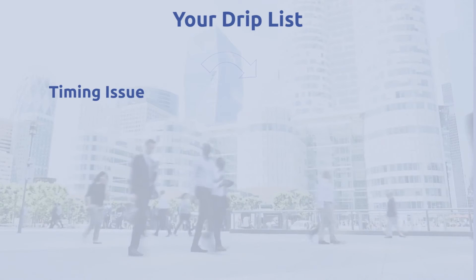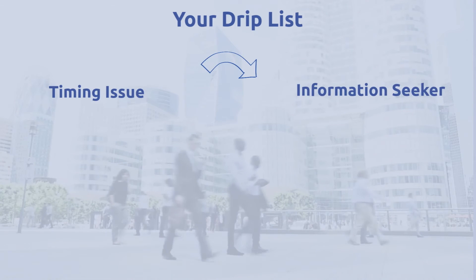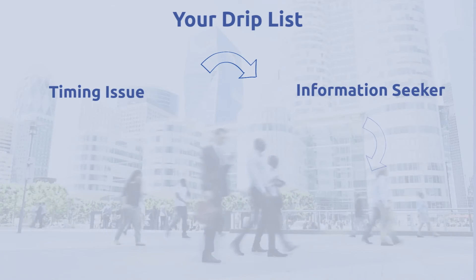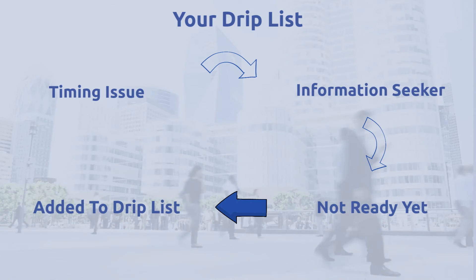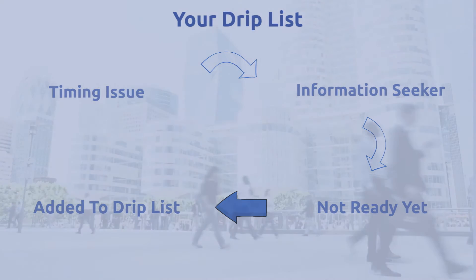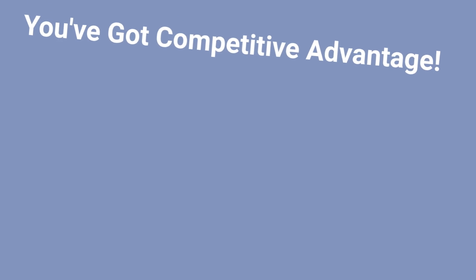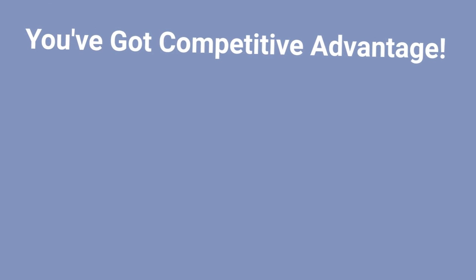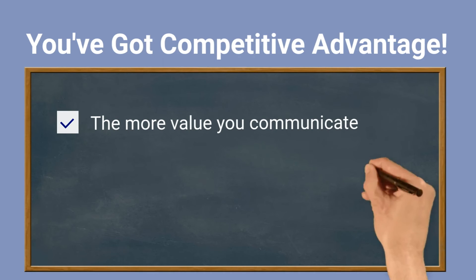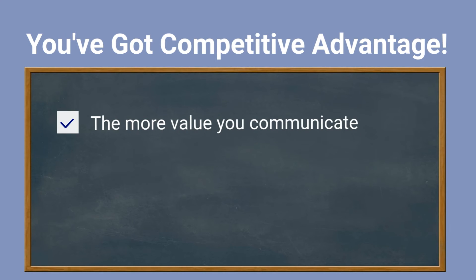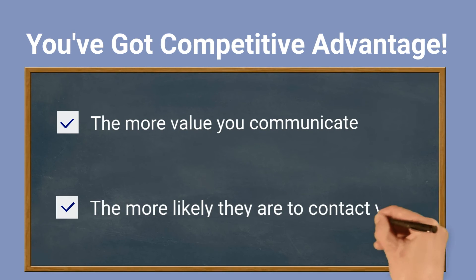Investors may reside on your drip list because of a timing issue — for example, they are gathering information but don't want to schedule a meeting until they are closer to their retirement dates. The fact that they contacted you for information creates substantial competitive advantage for the financial advisors who provide the information.